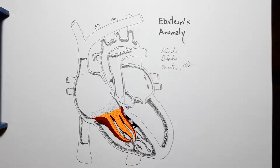Apically displaced means only that it would be displaced towards the apex of the heart — that is, the pointy end of the ventricles that's pointing down.